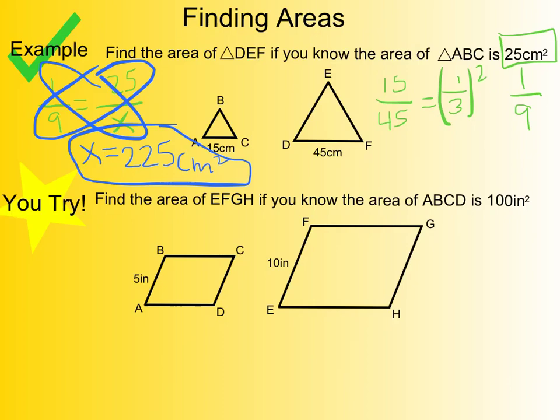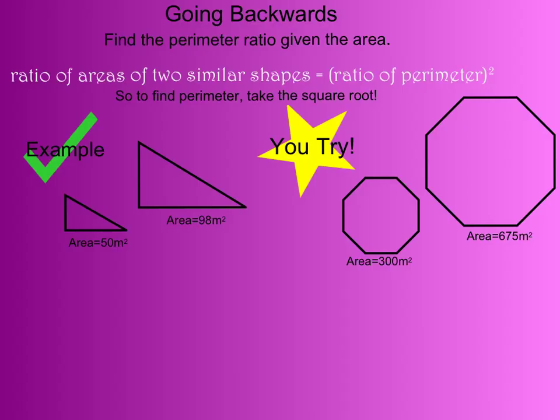We have one more thing to look at: going backwards. What if they give you the area and you need to determine the perimeter ratio? If you think back to what we learned, the ratio of the areas of two similar shapes equals the ratio of the perimeter squared.